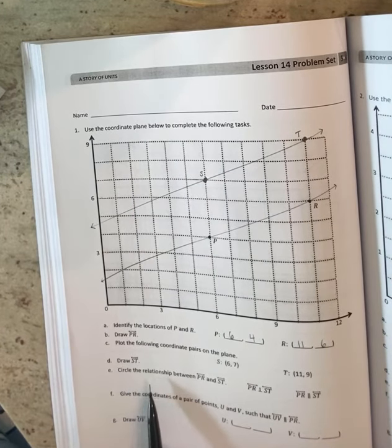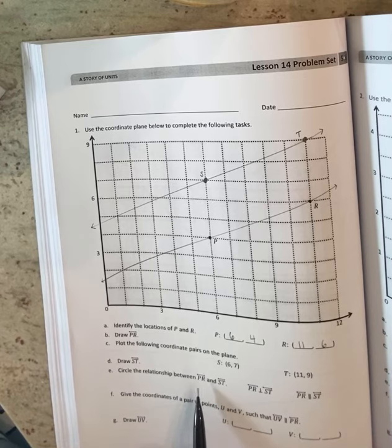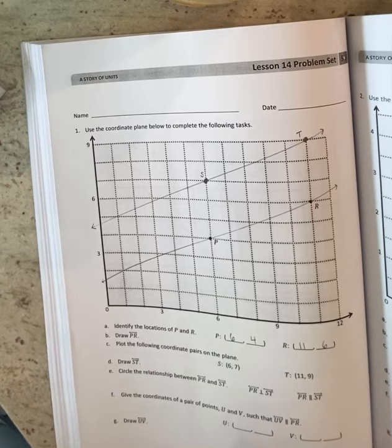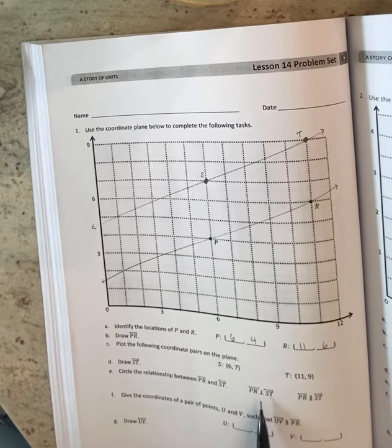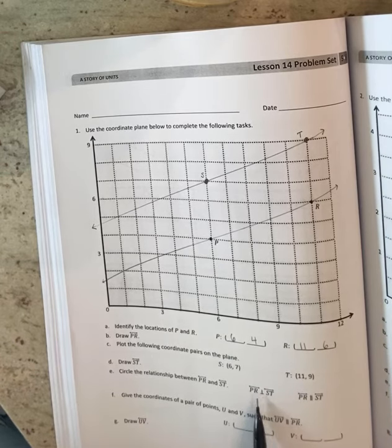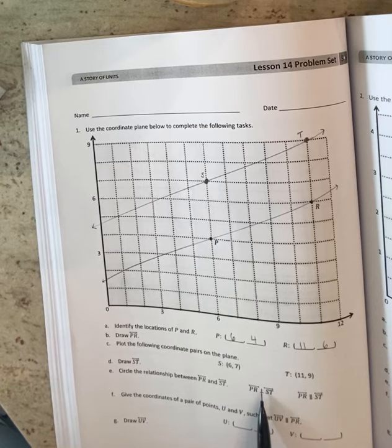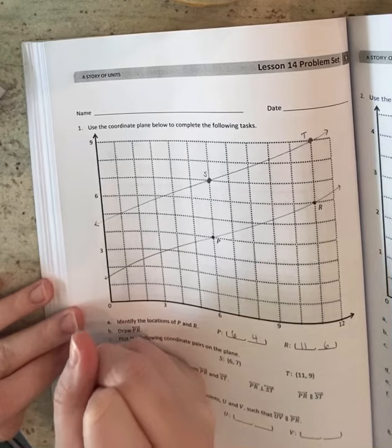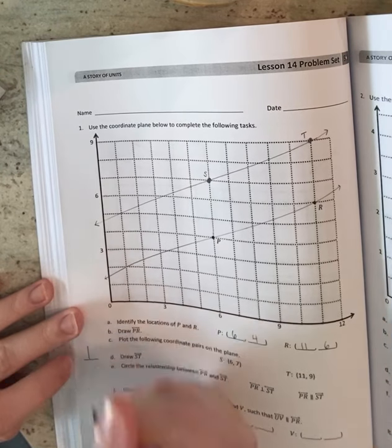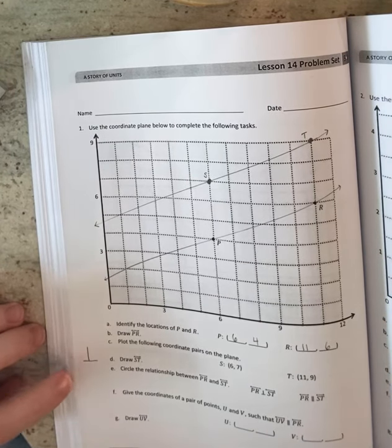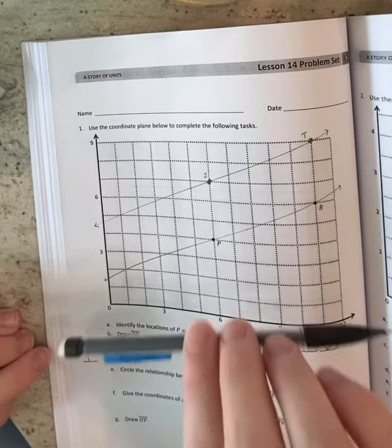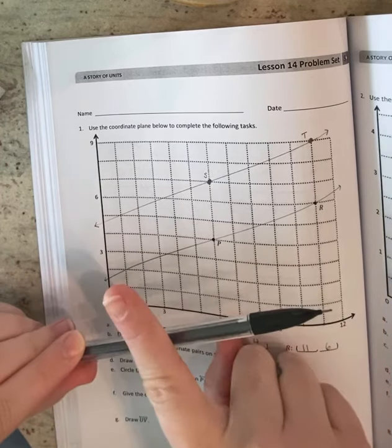Now it says circle the relationship between PR and ST. Okay. So I want to show you what some of these symbols are. If you notice in between the PR and the ST, there is this like upside down T. So it kind of looks like this. That means that they will intersect. So that means they're saying that the line PR and the line ST will intersect.